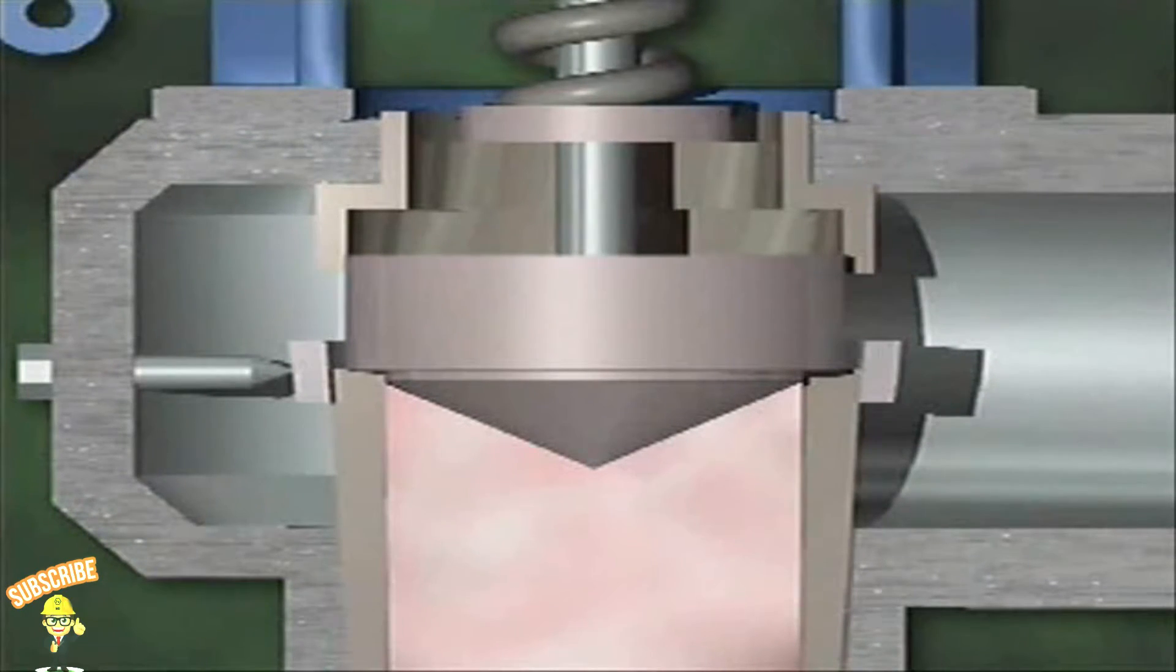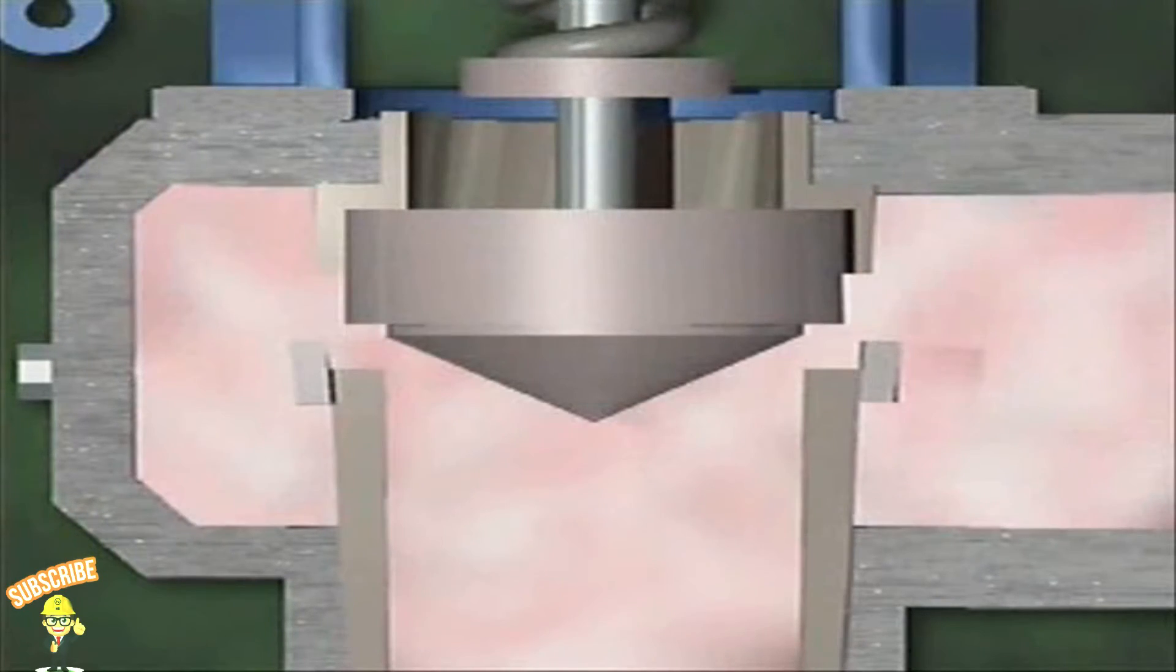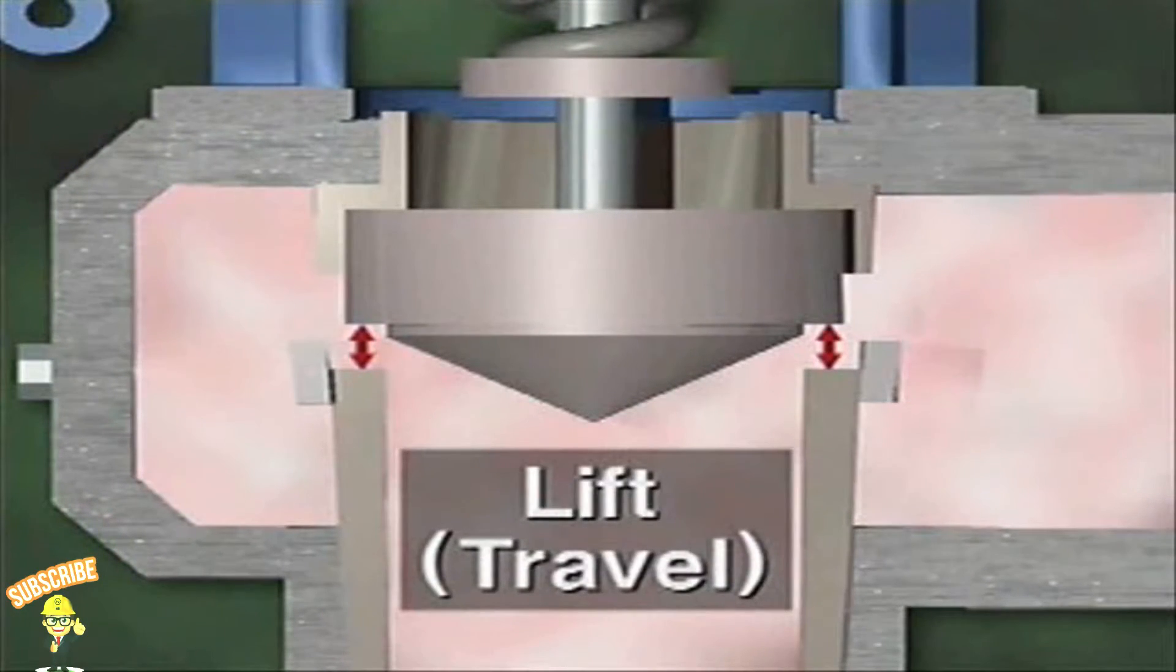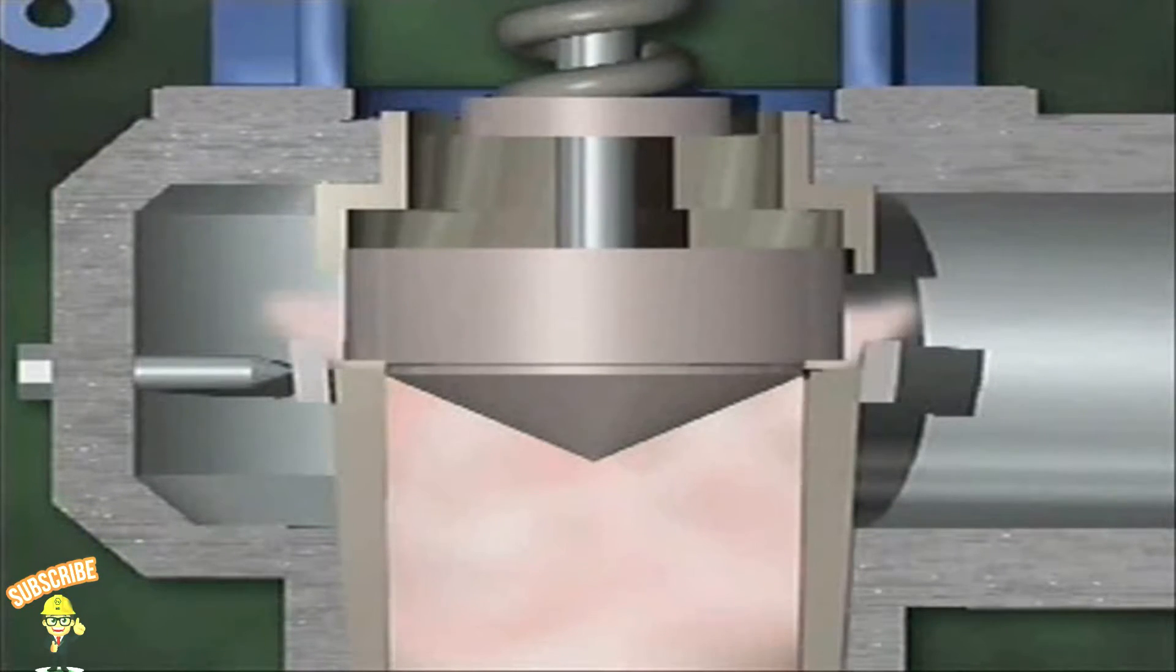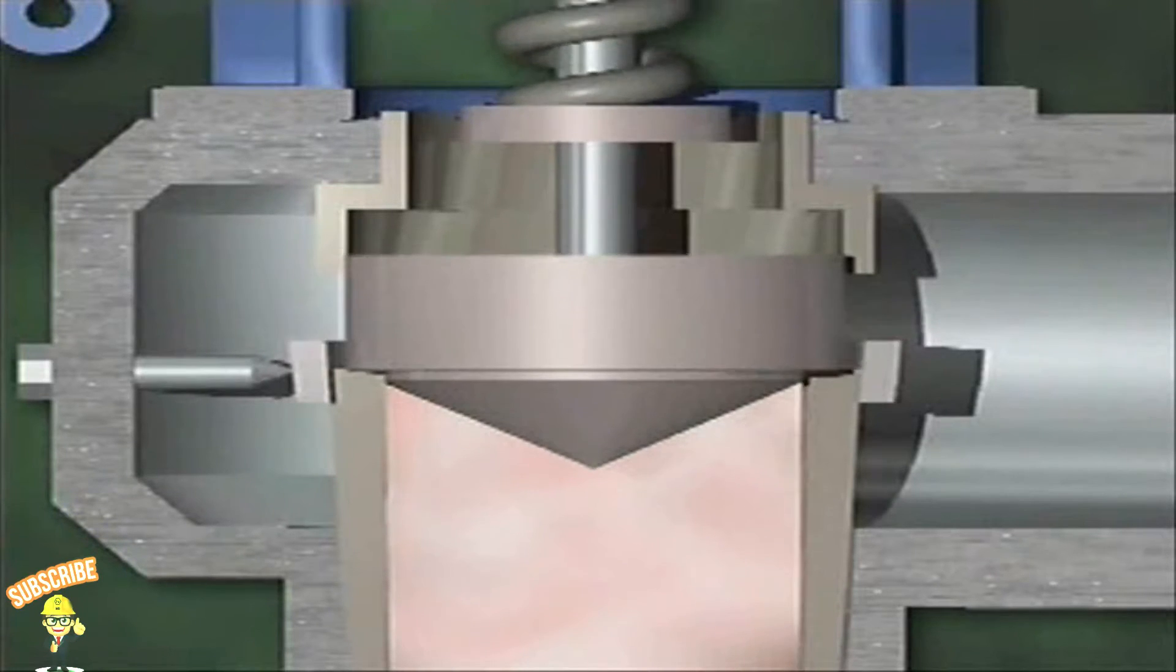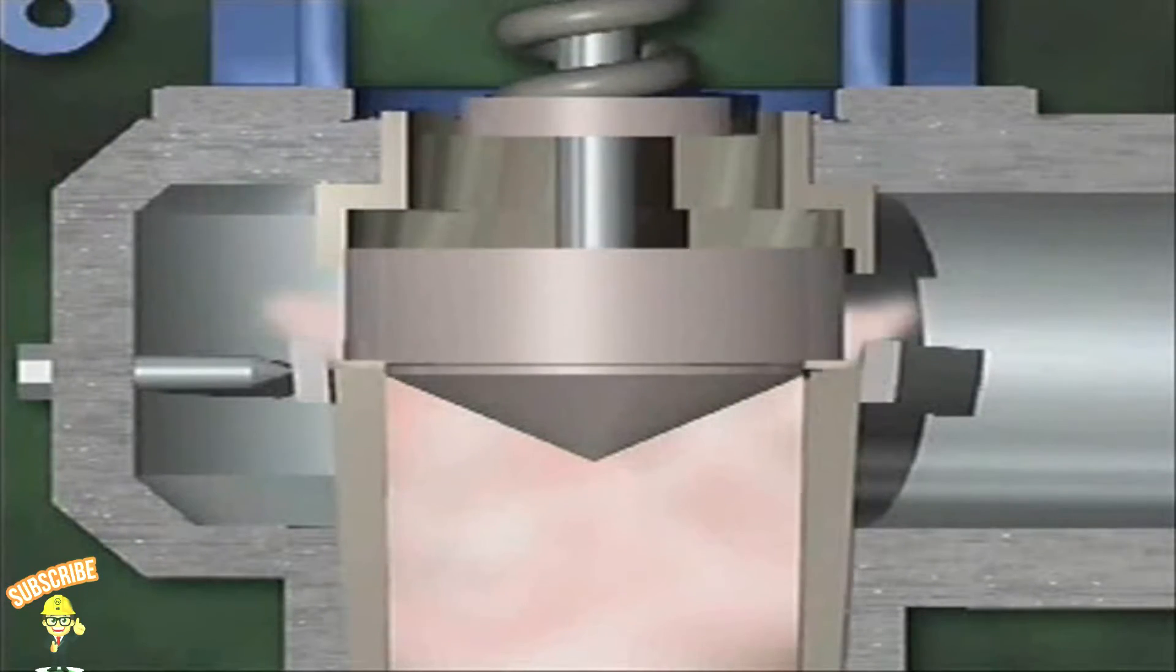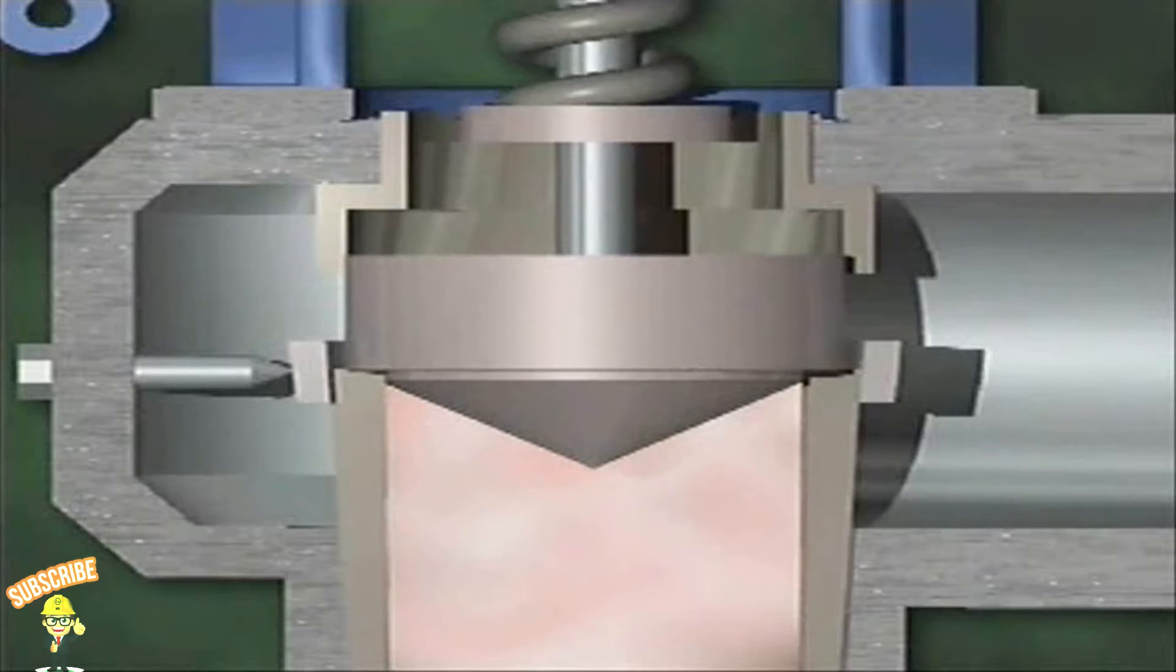The distance that a valve disc moves from the closed position to the fully open position is referred to as the valve's lift or travel. Adequate blowdown helps prevent a condition called chattering. If there's no difference between a valve's popping pressure and its seating pressure, the valve disc will jump up and down on its seat until pressure either increases enough to pop the valve open again or decreases enough to keep it closed. This condition is called chattering because of the sound that the disc makes as it moves up and down.